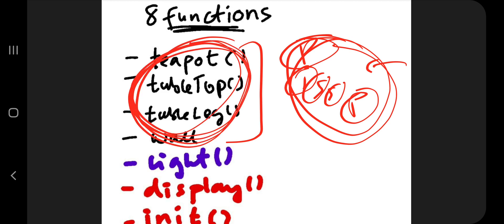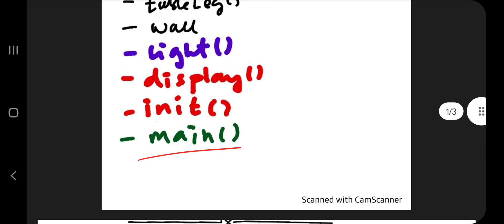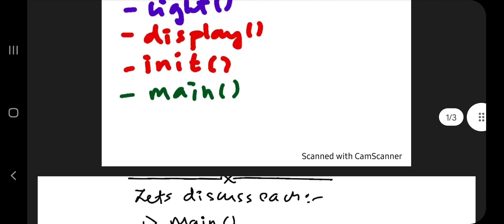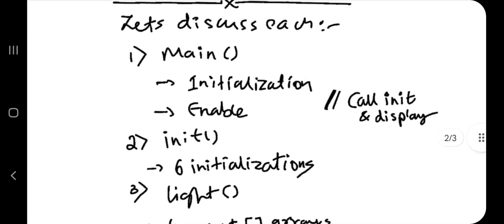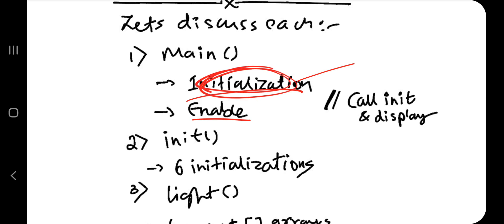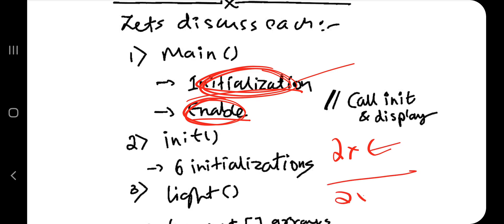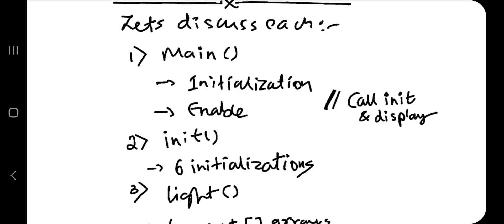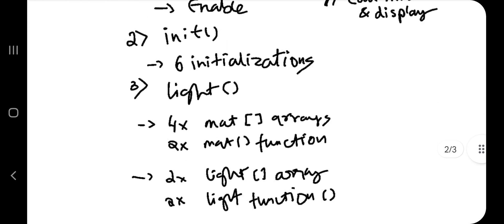We have four more functions remaining, among them main and init. In main there are two parts: initialization and enable. The initialization part includes init and glut display mode, create window, init position, init size, and calling the init function. In the enable part there are two enable functions, then shade model, then two more enable functions, then glut main loop. The display function is also called here.